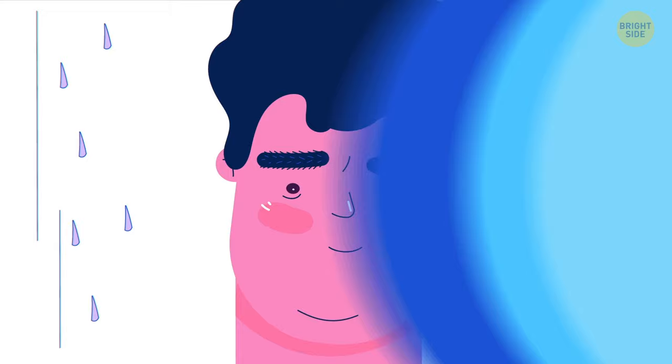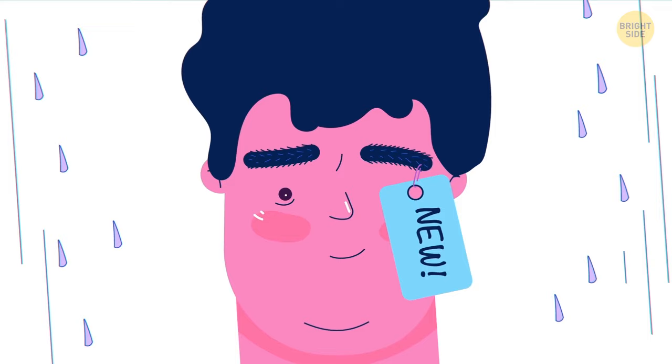Your eyebrows also have a lifespan – about 4 months for all the hairs to fall out and be replaced by new ones, thank goodness. Your eyes are the only organ that doesn't grow with age.